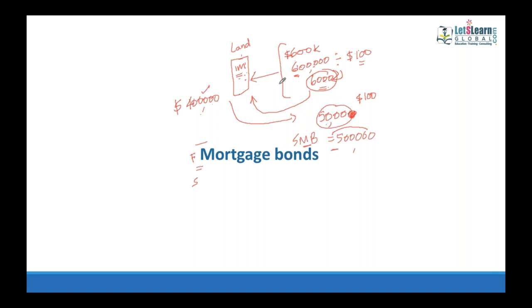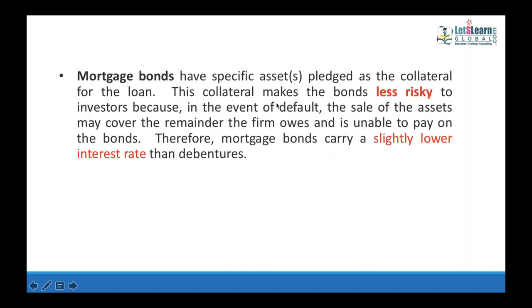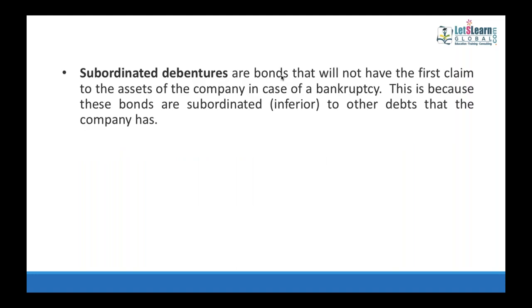Second mortgage bondholders are not fully secured — they are paid only after clearing the first mortgage bondholders' money. Therefore, mortgage bonds are of two types: first mortgage and second mortgage. First mortgage bondholders may be paid less interest than second mortgage bondholders — the higher interest attracts investors to the riskier second mortgage. Subordinated debentures are similar to debenture bonds with no collateral security; investors get a high rate of interest.